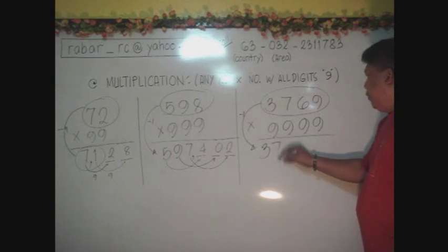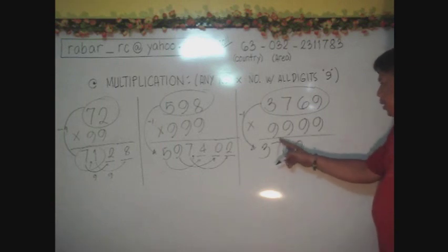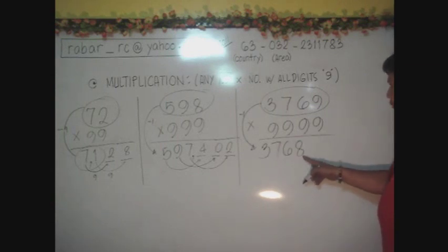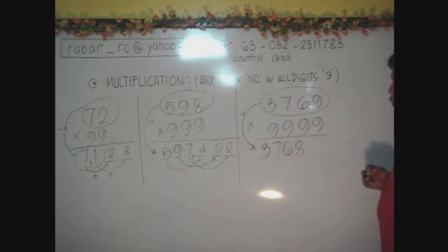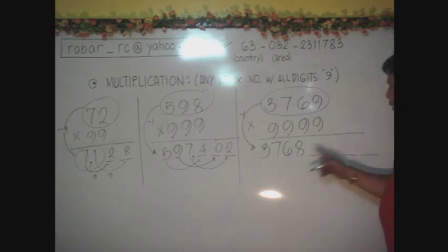In the sense that we have 4 digits here, which corresponds to the number of nines that we have there, we need 4 digits more to complete the answer. And that 4 digits is coming from these first 3 digits that we put here.